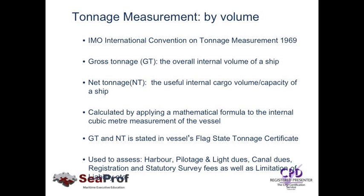In other words, gross tonnage represents the overall internal volume of a ship. To obtain the net tonnage figure, we make a deduction from the gross tonnage of the spaces which are not used for cargo, and that provides the net tonnage figure. The GT and the NT will be stated in the ship's flag state tonnage certificate, an official document which must be carried on board all vessels, and there should always be a copy in the office of every good ship owner. Now we have the GT and NT figures — what are they used for?